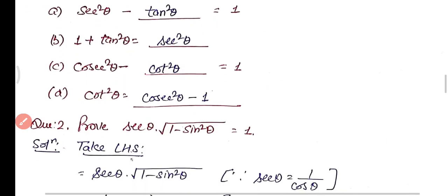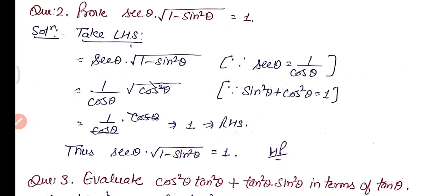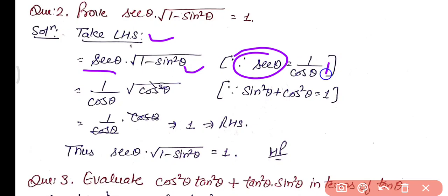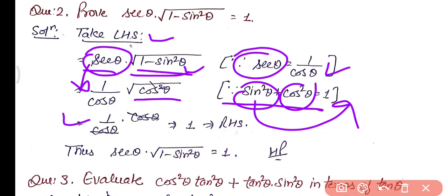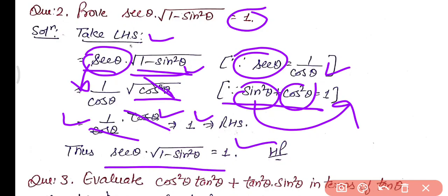Question 2: Prove that sec θ multiplied by √(1 minus sin² θ) equals 1. Taking the left-hand side, we write sec θ as 1 over cos θ. Since sin² θ plus cos² θ equals 1, we get 1 minus sin² θ equals cos² θ. So √(1 minus sin² θ) equals cos θ. Therefore 1 over cos θ multiplied by cos θ equals 1, which is the required right-hand side. Hence proved.